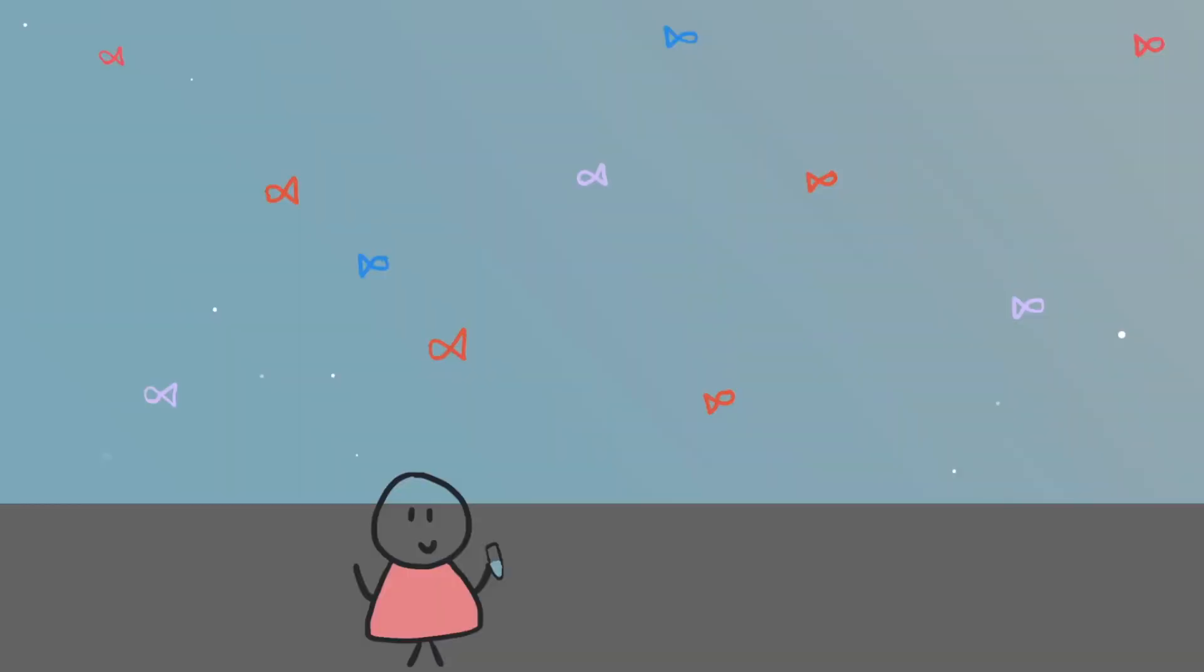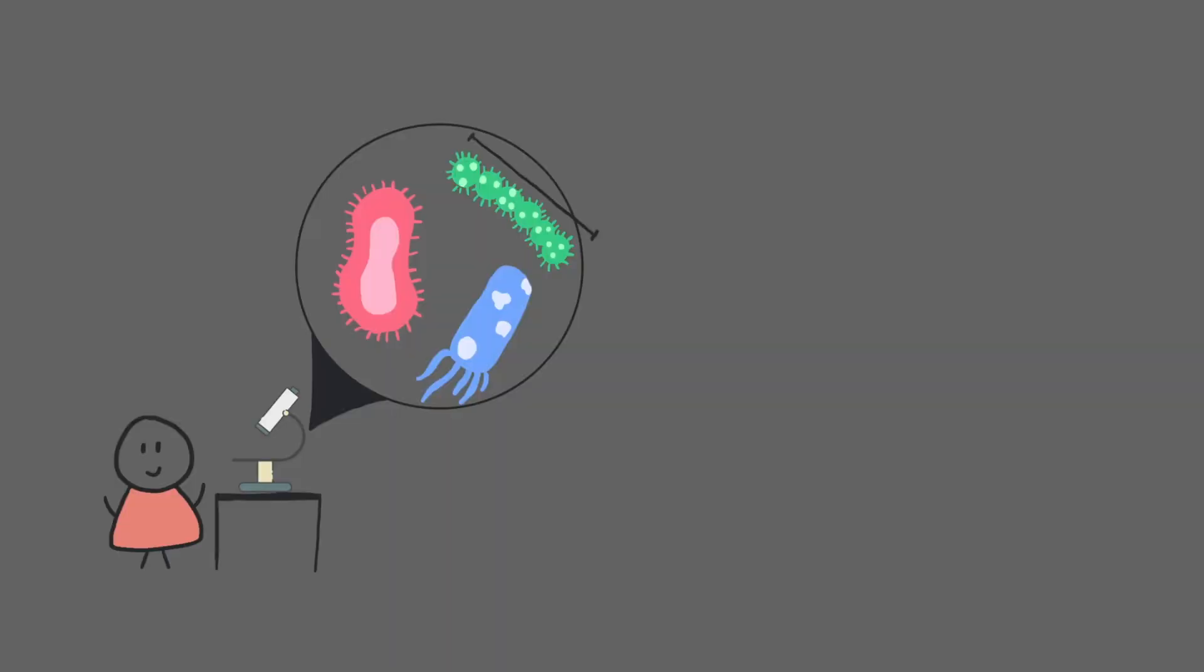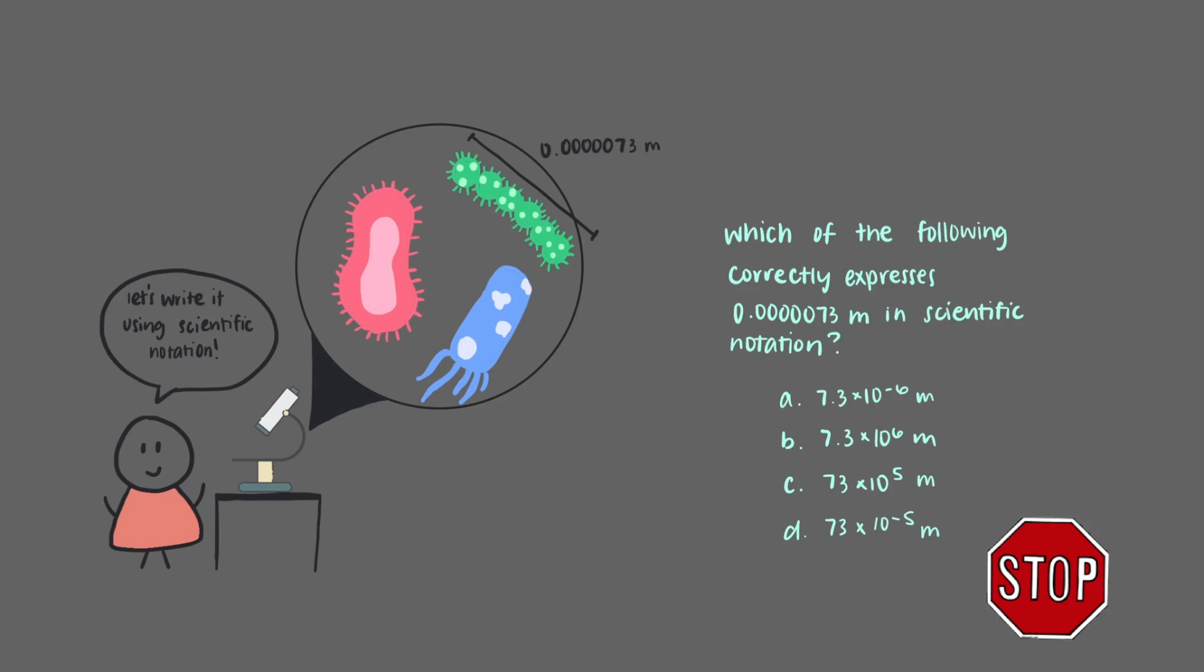Here's another problem. Imagine that you're now a scientist that took a sample of river water and is studying the critters under a microscope. This particular bacterium has a length of 0.000073 meters. You don't like having to write that many zeros out, so you'd rather write this number using scientific notation. Which of the following expressions is correct?